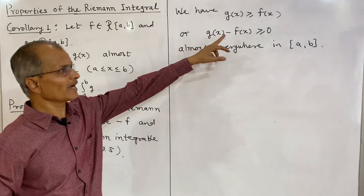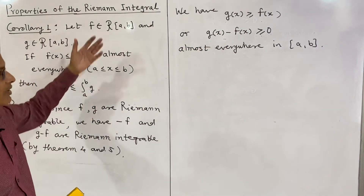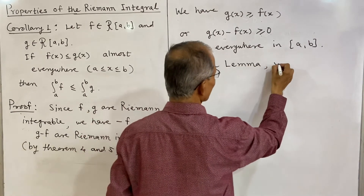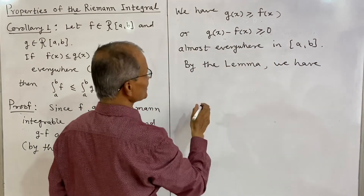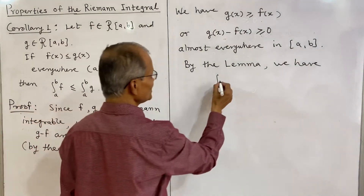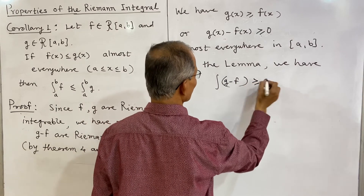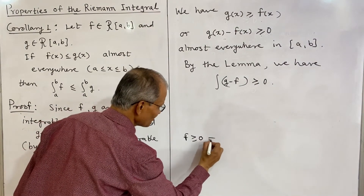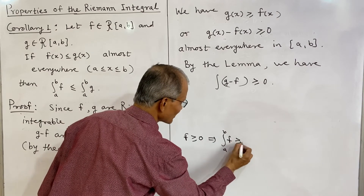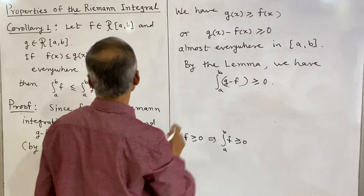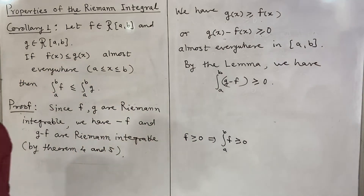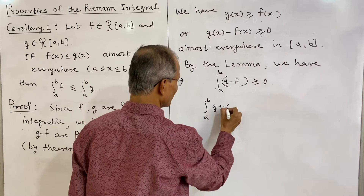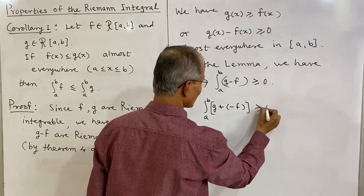Thus g − f ≥ 0, and by the above lemma we have that the integral of g − f is greater than or equal to 0. That is, the integral from a to b of (g − f) ≥ 0. Because g − f ≥ 0, and by the lemma: if f ≥ 0 then the integral of f from a to b is ≥ 0. So the integral from a to b of (g − f) ≥ 0, which can be written as the integral from a to b of g + (−f) ≥ 0.